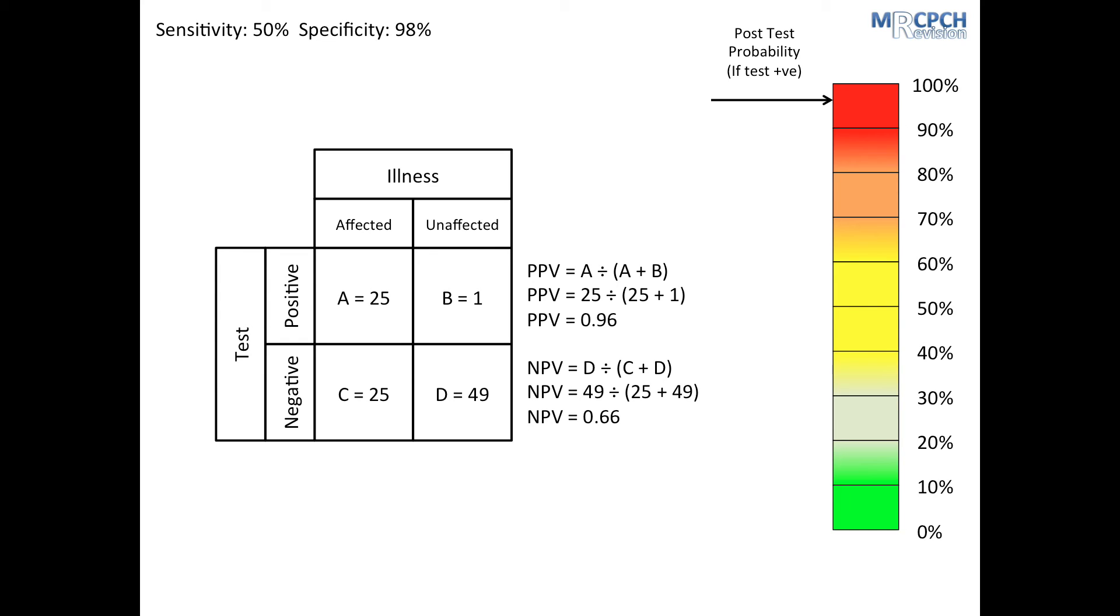But that's the proportion of people who test negative that don't have the illness, which isn't what we're interested in. We're interested in the proportion of people who test negative that actually do have the illness, the false negative rate. That is worked out by subtracting the negative predictive value from 1. So, 1 minus 0.66 is 0.34, or 34%. So, the post-test probability of UTI if the nitrite test is negative is 34%, which is not quite as helpful in ruling out UTI as a positive result was in ruling it in.